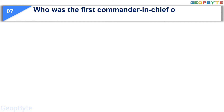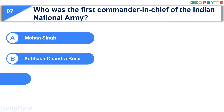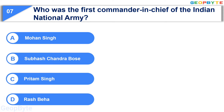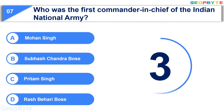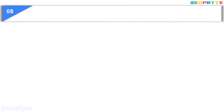Moving to the seventh question: who was the first commander-in-chief of the Indian National Army? Option A: Mohan Singh, Option B: Subhash Chandra Bose, Option C: Pritam Singh, Option D: Raj Bihari Bose. Your time starts now. Your time is up and the correct answer is Option A: Mohan Singh.